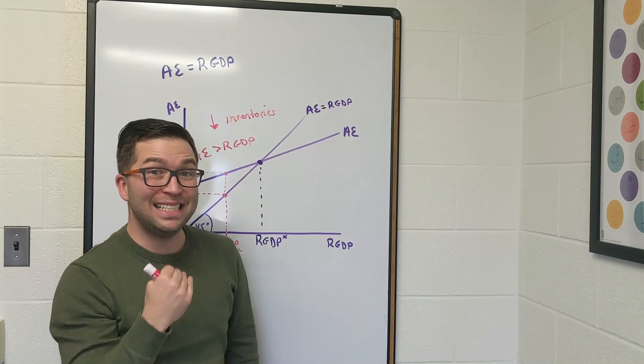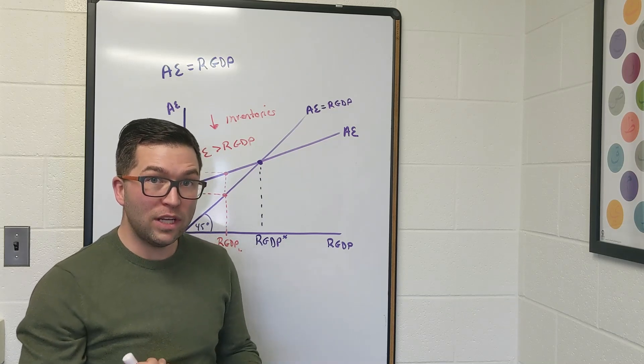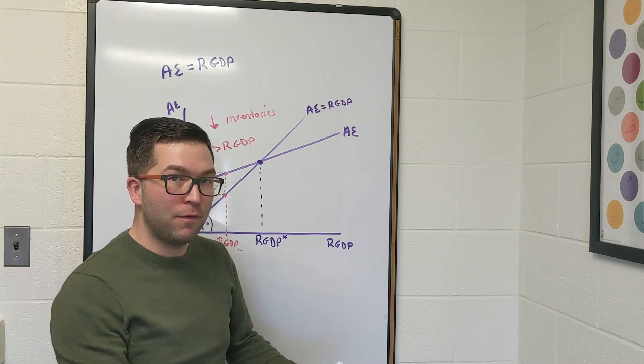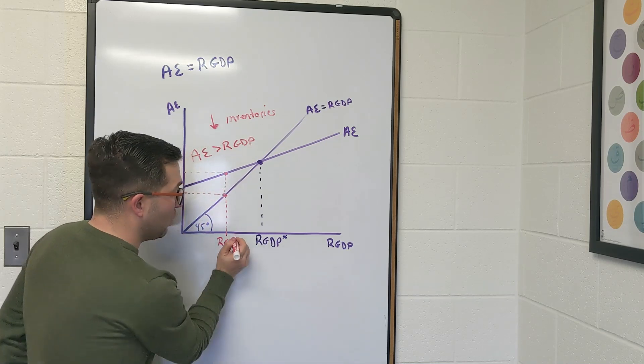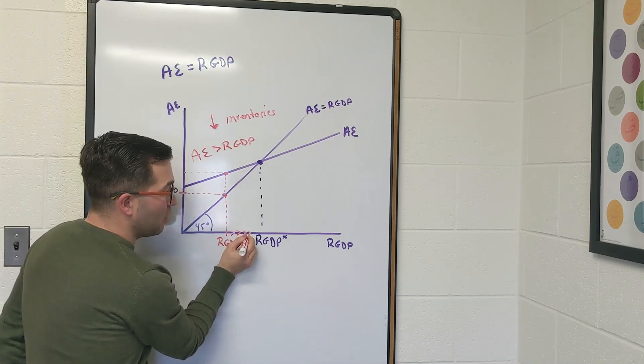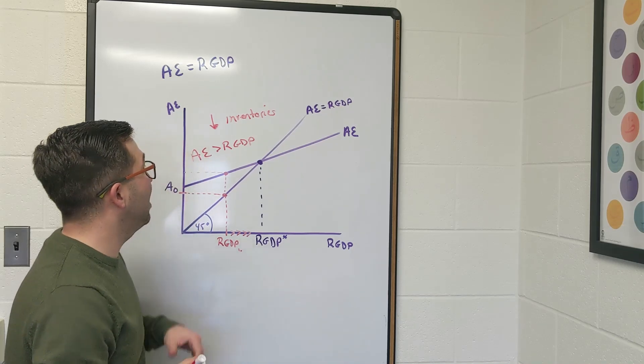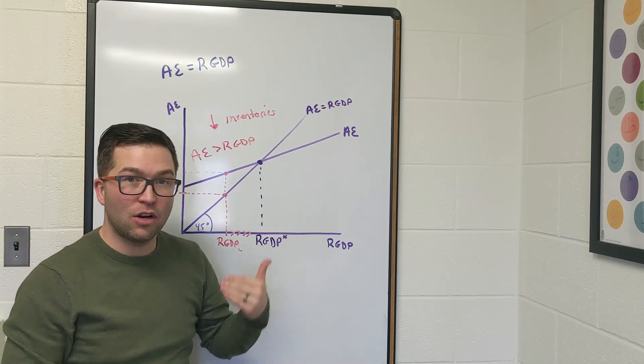We see an unplanned decrease in inventories, which is going to push more production going into the future. So we'll see this real GDP start to rise and move back towards our equilibrium point because our inventories are starting to come down.